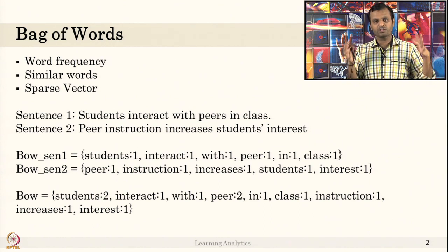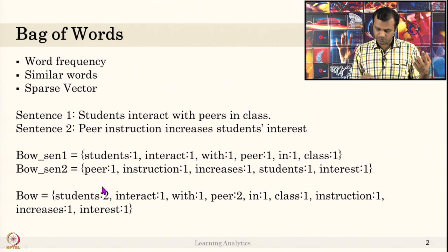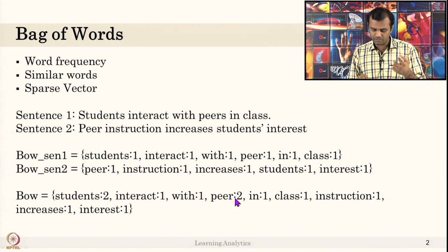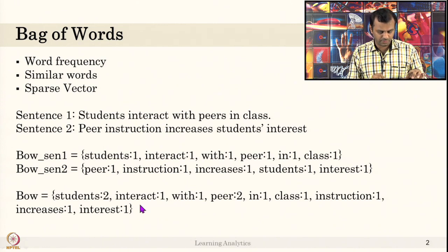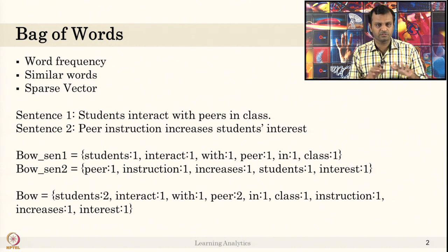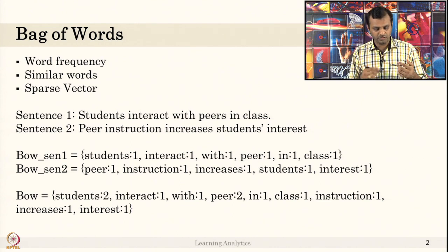If I combine the two sentences into one bag of words: 'student' occurred twice — once in each sentence — 'interact' occurred once, 'with' occurred once, 'peer' occurred twice, 'class' once, and so on for all the remaining words. That is very basic — all about bag of words. I have just counted whether each unique word occurs once or twice across the sentences.